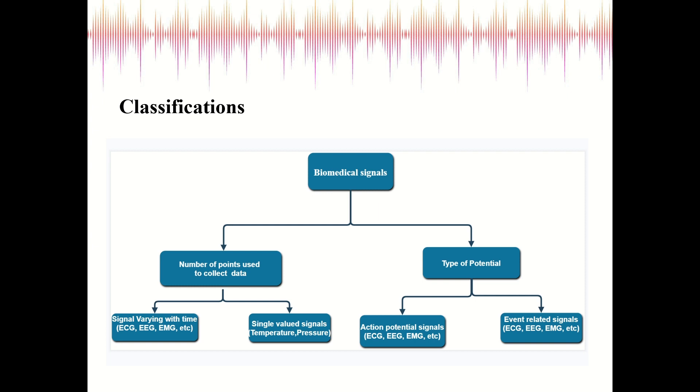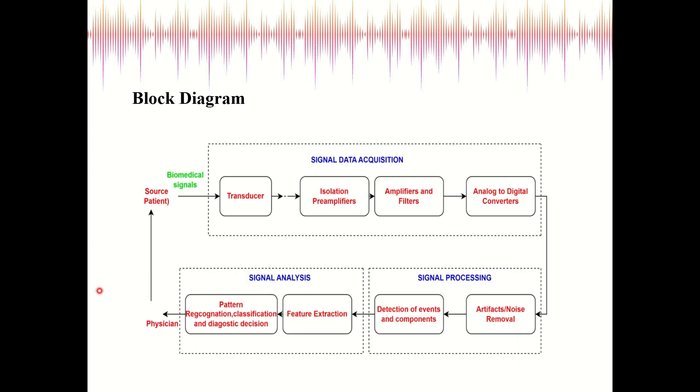This is the overall block diagram which is used for computer analysis of biomedical signals. If you see the starting, it is a source or an experimental subject—you can refer to it as a patient. The source is a patient from where we take the biomedical signal, that can be in the form of ECG, EEG, and EMG depending on which part of the body we are diagnosing.